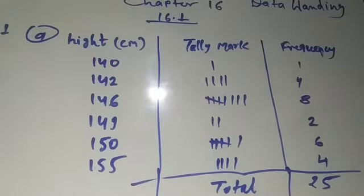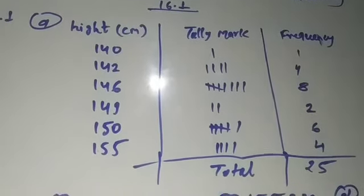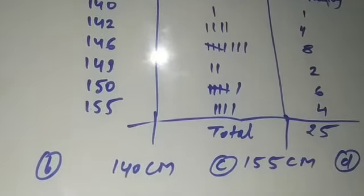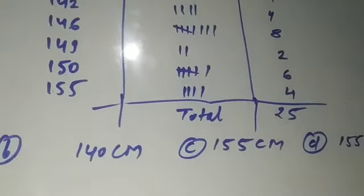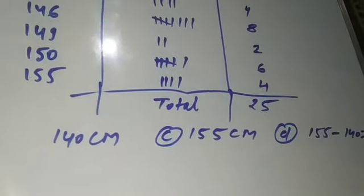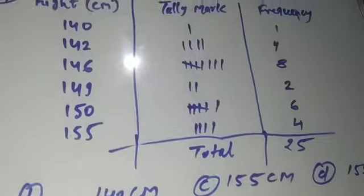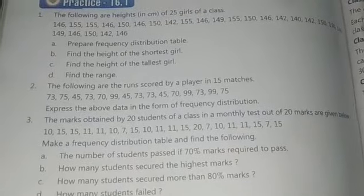For the second part, the shortest height is 140 cm, the tallest height is 155 cm, and the range is 155 minus 140 = 15 cm. So Question 1 is finished here.